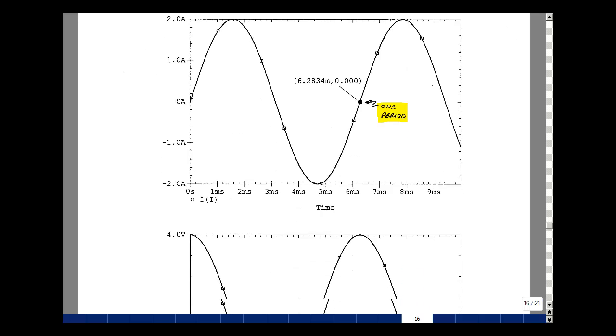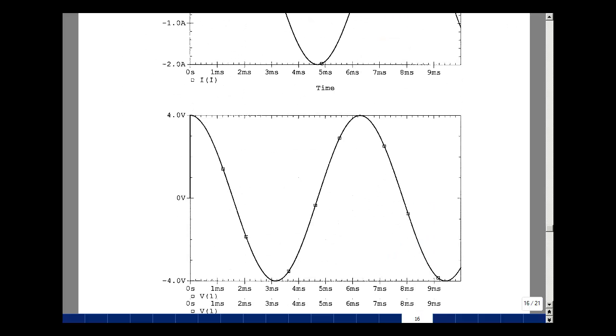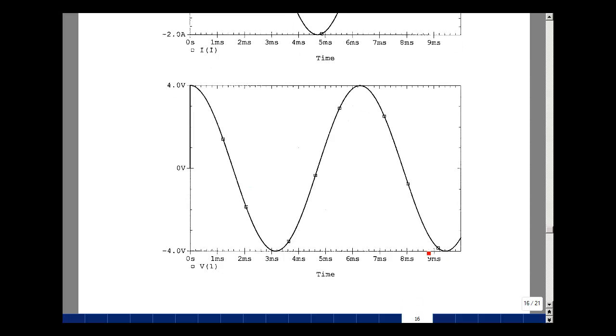Let's ask for the voltage at node 1. You can see that it's a cosine function with an amplitude of 4, going between plus 4 and minus 4. So that checks with our calculation.